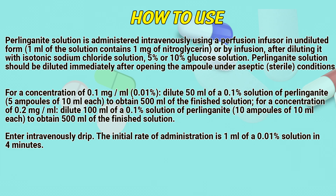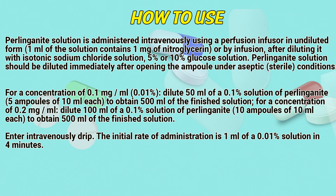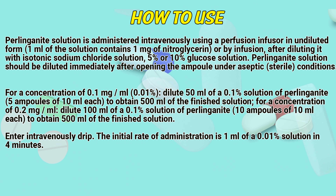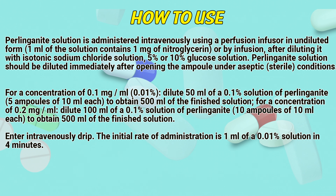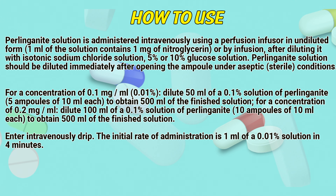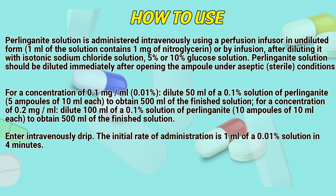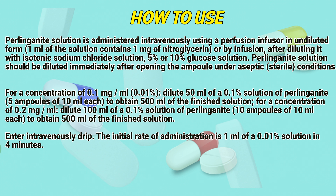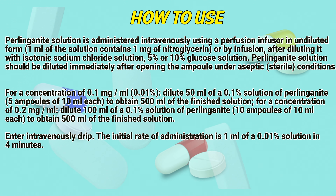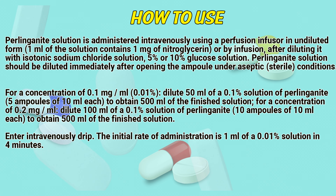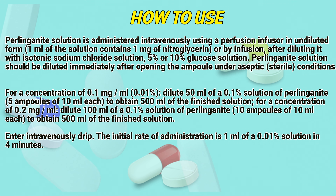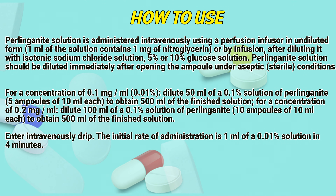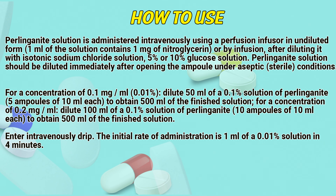Perlingonide solution is administered intravenously using a perfusion infuser in undiluted form. One ml of the solution contains 1 mg of nitroglycerin. Alternatively, it can be given by infusion after diluting with isotonic sodium chloride solution or 5–10% glucose solution. The solution should be diluted immediately after opening the ampoule under aseptic sterile conditions. For a concentration of 0.1 mg per ml, dilute 50 ml of 0.1% solution of perlingonide (5 ampoules of 10 ml each) to obtain 500 ml of the finished solution.